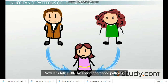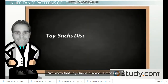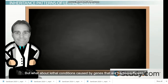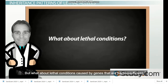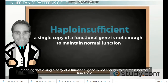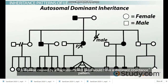Now let's talk about inheritance patterns. We know that Tay-Sachs disease is recessive because the Hex-A gene is haplosufficient. But what about lethal conditions caused by genes that are haploinsufficient, meaning that a single copy of a functional gene is not enough to maintain normal function? A disease caused by a haploinsufficient gene would have a dominant inheritance pattern.